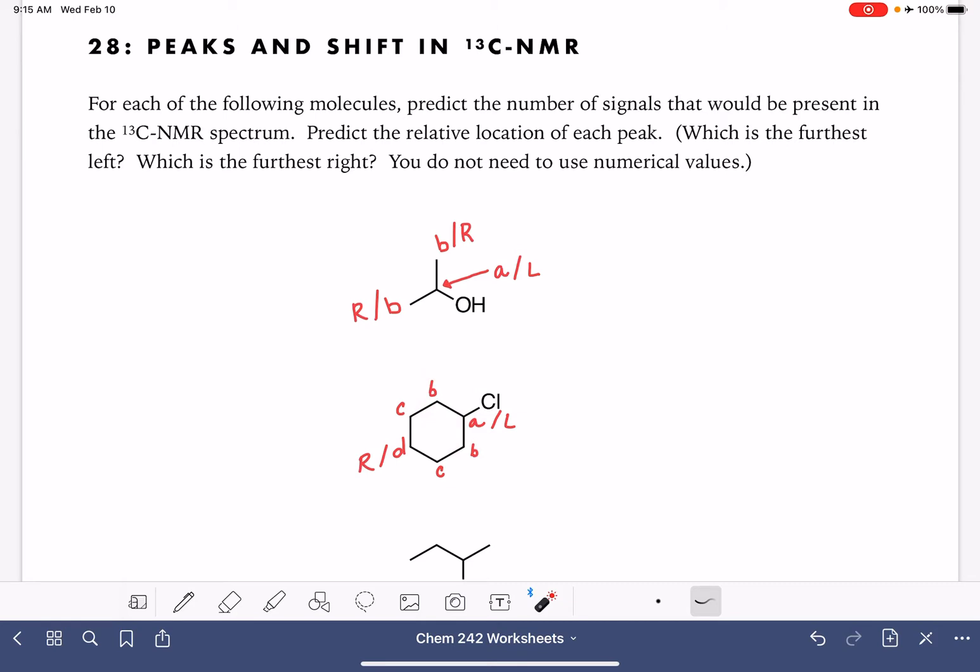The progression of the peaks from left to right will go A, B, C, and D. So if I just draw a spectrum, A will be here, and then B, and then C, and then D.